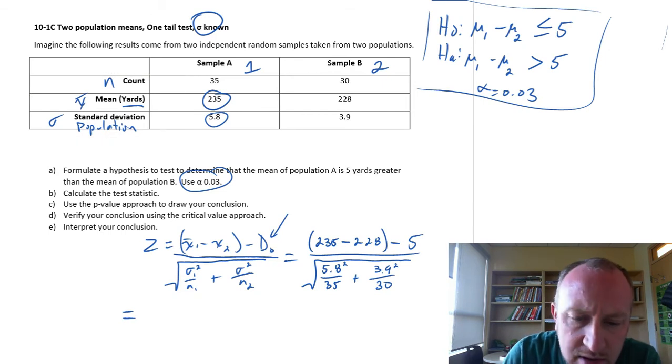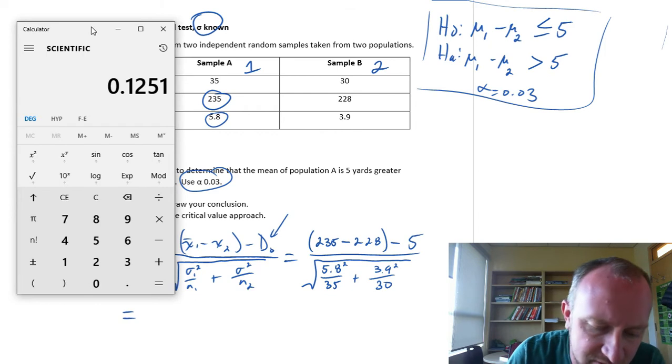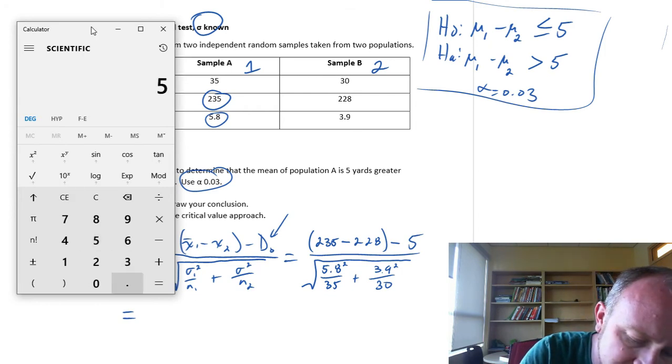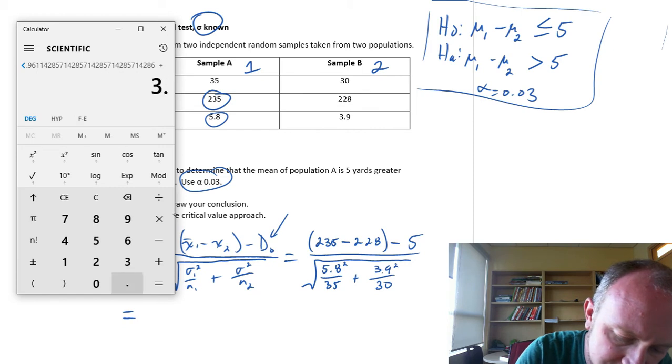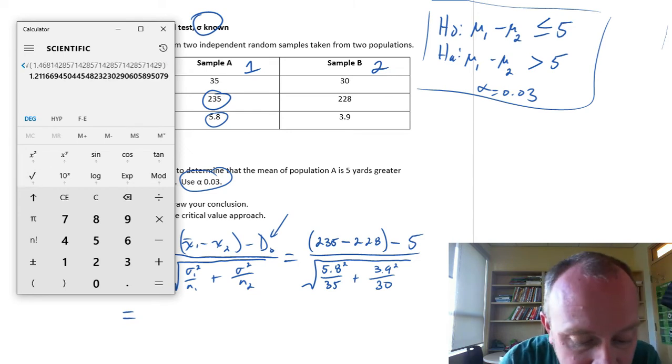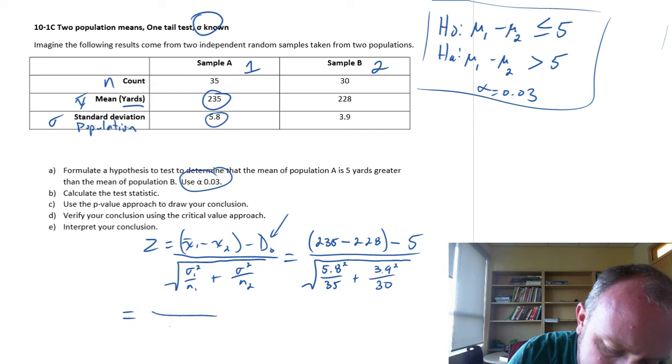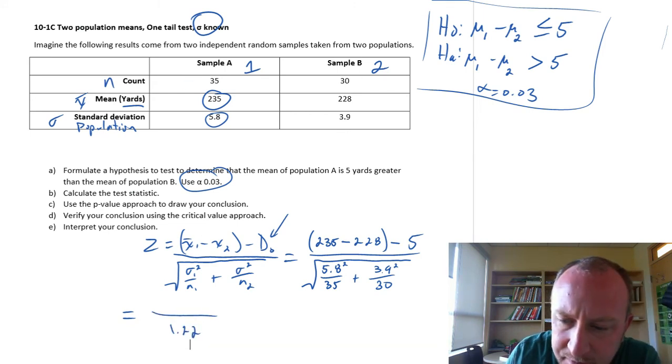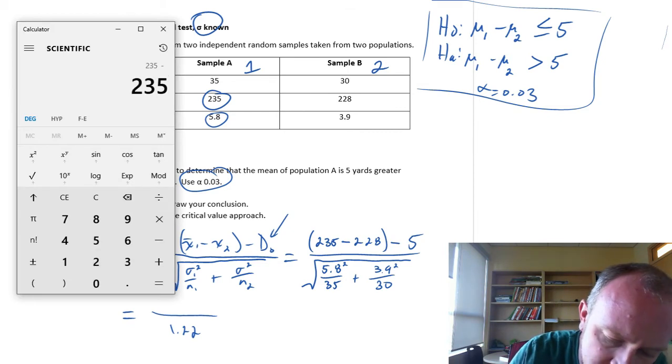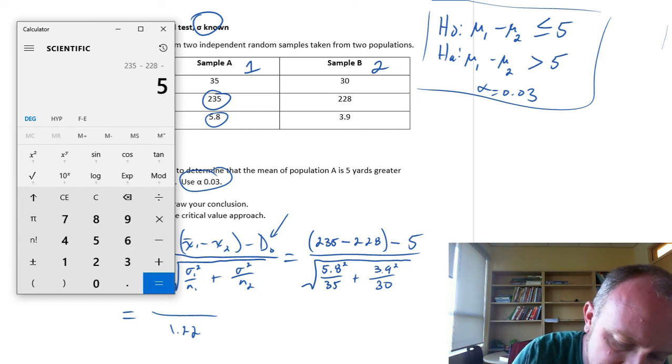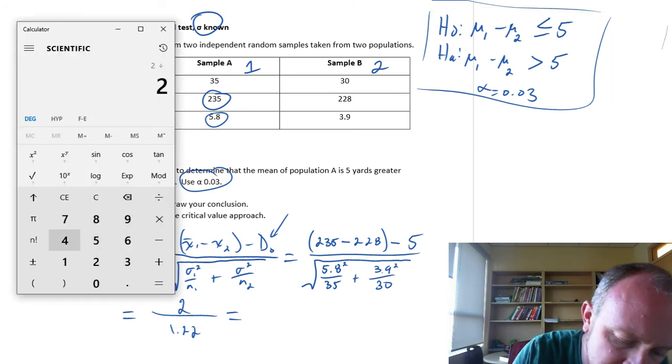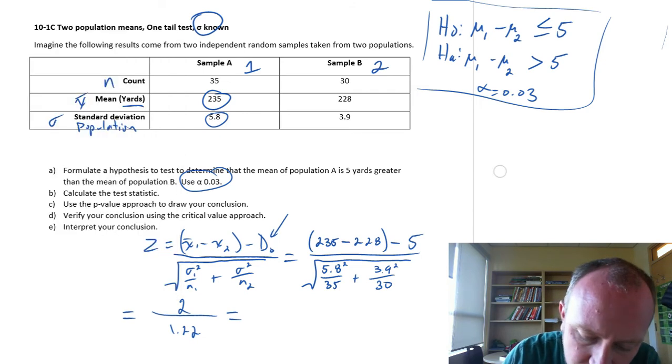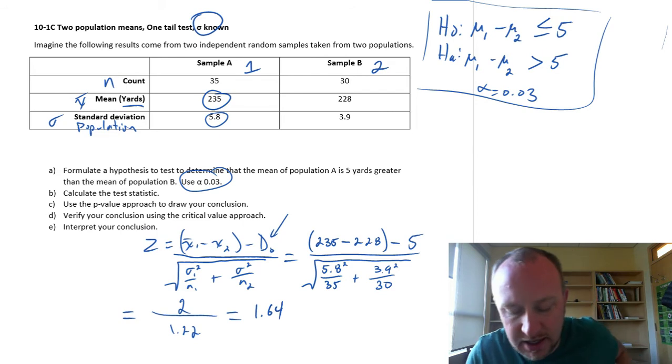Now let's get that calculator. And here again, I'm going to do this in steps, just to avoid any silly calculation or button press mistakes. 5.8 squared divided by 35, plus 3.9 squared, divided by 30, equals, and square root that. So my denominator is 1.22, and the numerator, 235, minus 228, minus 5, so I've got a numerator 2. And so now I have 2 divided by 1.22, 1.64. So we have our z statistic.